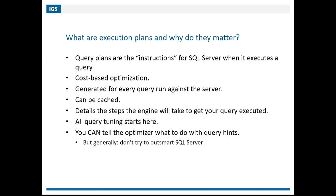Query plans are basically a set of instructions that get used by SQL Server every time you run a query. SQL Server does what's called cost-based optimization for your SQL queries. Every time you run a query, SQL Server looks at what you're trying to do and assigns it a cost - a number. SQL Server actually tries to create a bunch of plans for your query and just chooses the one that is the least terrible in terms of cost. That cost is some number greater than zero. It can be less than one, but it's never zero or less.